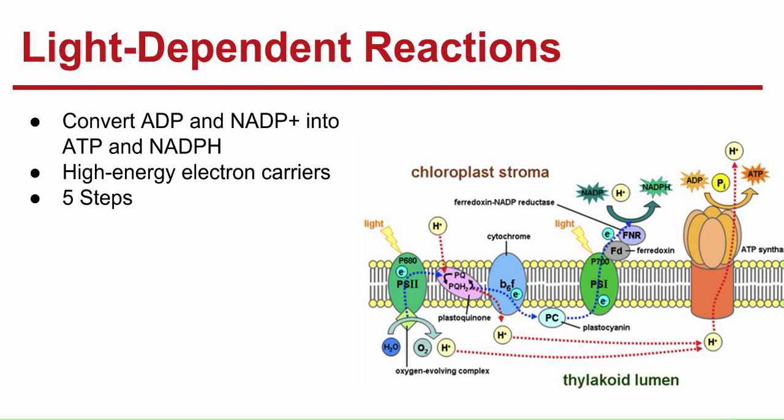Because the H+ ions cannot travel across the membrane directly, there's a membrane protein called ATP synthase that spans the membrane and allows H+ ions to pass through it. As they pass through the ATP synthase, the protein rotates like a turbine, and as it rotates, ATP synthase binds ADP and a phosphate group to produce ATP. It adds the third phosphate group onto ADP, producing ATP.